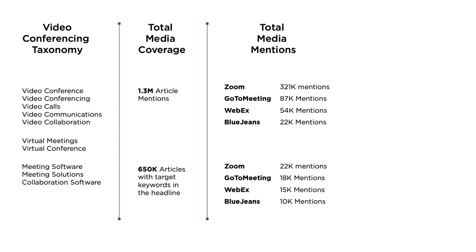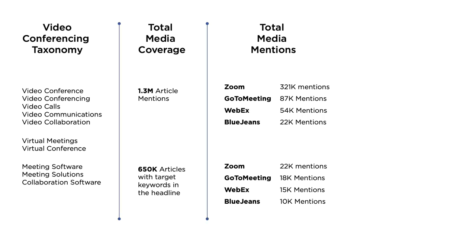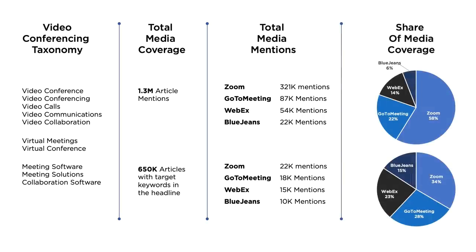When looking at exclusive coverage, you see those numbers decline dramatically — and that's common. You're not going to get that much exclusive coverage, unless maybe you're Zoom right now and you're dominating headlines everywhere. But in normal circumstances, you'd definitely see a decrease looking at exclusives versus pure mentions. In this case, Zoom has 22,000 mentions in the exclusive view. This gives you your share of coverage: Zoom has 58% share of coverage within the context of article mentions, and that number goes down dramatically when looking just at exclusives.